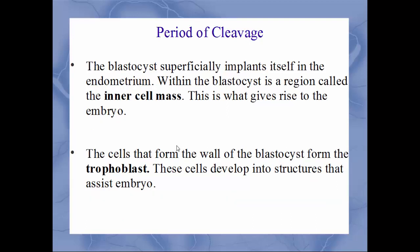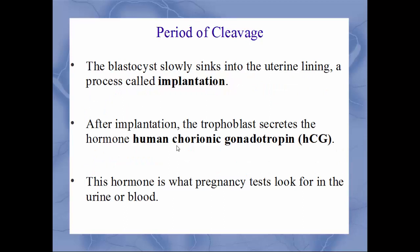This blastocyst will superficially implant itself on the inner lining of the uterus, the endometrium. Within this blastocyst, in the inner part, is called the inner cell mass — this is what will eventually become the embryo and eventually the baby. The cells that form the outer wall of the blastocyst form what's called the trophoblast. Remember, 'troph' from Latin means to feed, so these are the structures that will develop to assist the embryo — eventually the placenta. The blastocyst will now slowly sink into the uterine lining in a process called implantation.